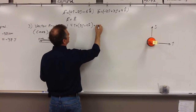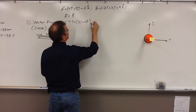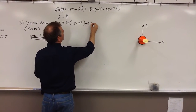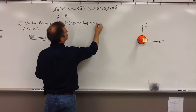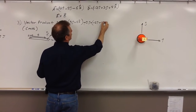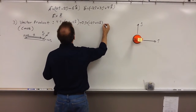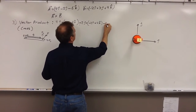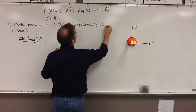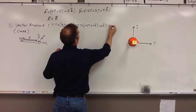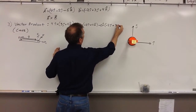And then I'm going to do plus — 2j-hat cross negative 2i-hat plus 4k-hat. Minus 6k-hat cross negative 2i-hat plus 3j-hat.